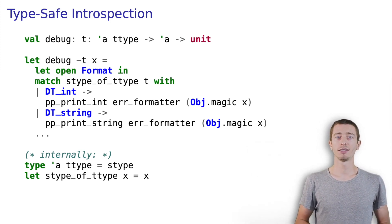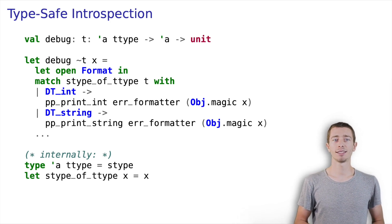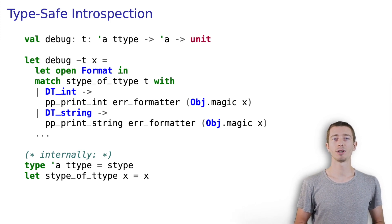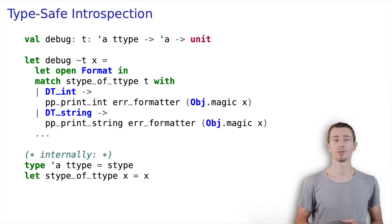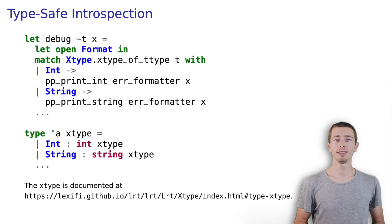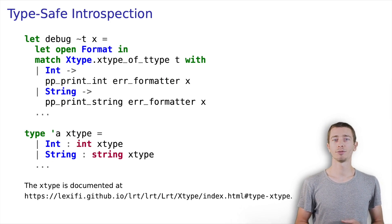Internally, the ttype is nothing else than the stype. The compiler extension generates untyped stypes and then casts them to the corresponding typed ttypes. Since backwards compatibility was a main goal, the new PPX sticks to the same representation. However, since GADTs are a thing, it is possible to extend the stype with witnesses for the value's type. The xtype_of_ttype function does exactly that. As you can see, no unsafe functions are needed in the resulting introspective code.